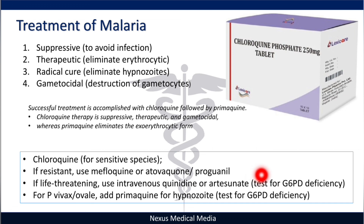For Plasmodium ovale and vivax, add primaquine to eliminate hypnozoites, and again test for glucose-6-phosphate dehydrogenase deficiency.